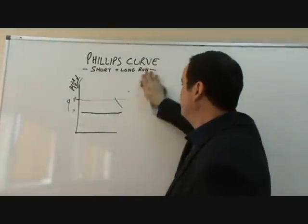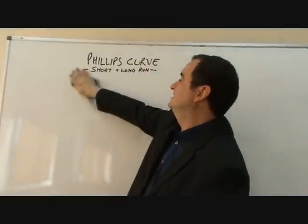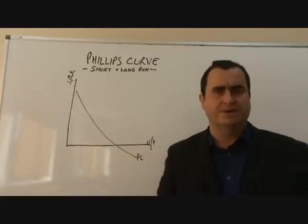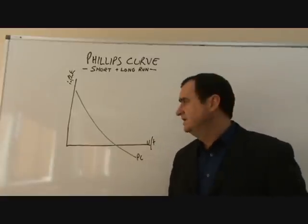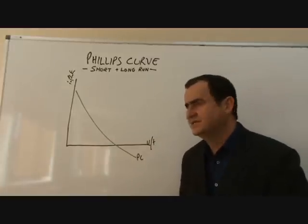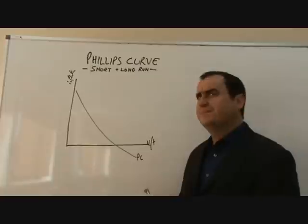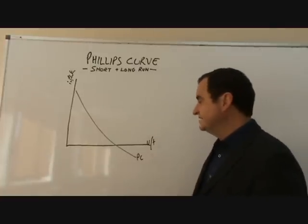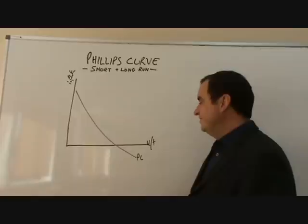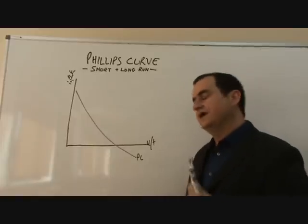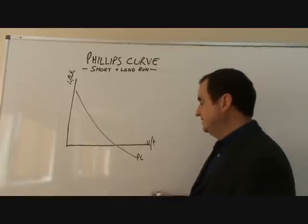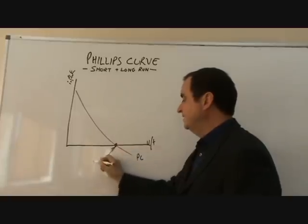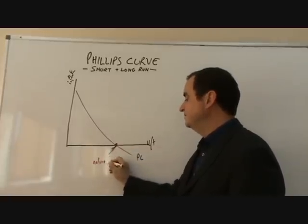So that's the short-run Phillips curve. Now let's get to the long-run Phillips curve. A couple of economists, mostly led by Milton Friedman, looked at this issue again and decided that what they'd been looking at was merely a short-term phenomenon. In fact, in the long run, there was a certain level of unemployment which they called the natural rate of unemployment.